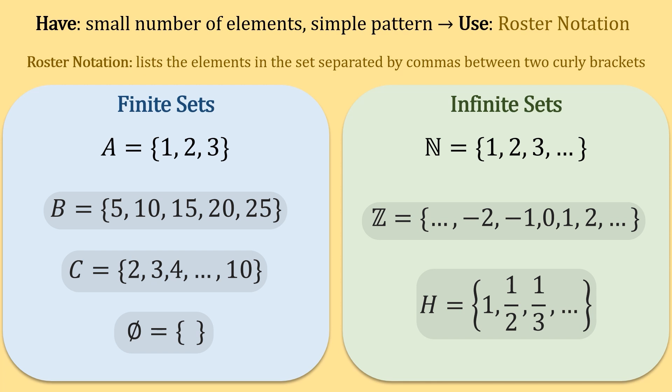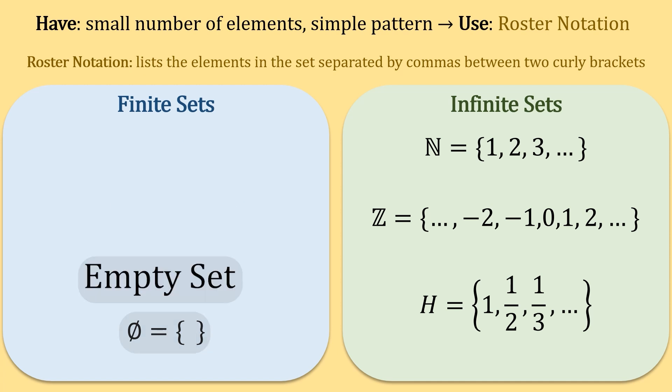Here are a few more examples of roster notation. This particular set is a special set which contains no elements. We just see curly braces with nothing in between, or no elements within it. This set is referred to as the empty set. This symbol is used to represent the empty set.